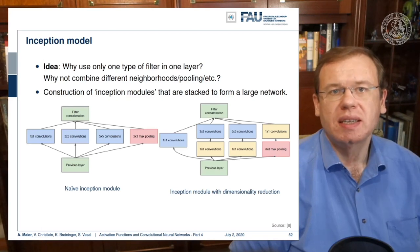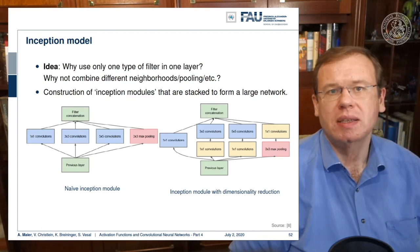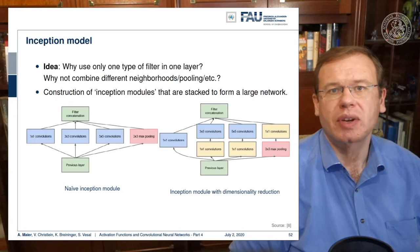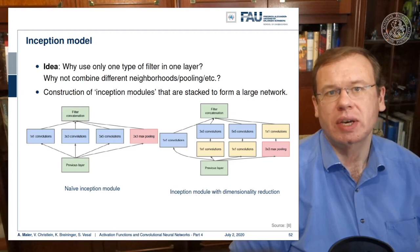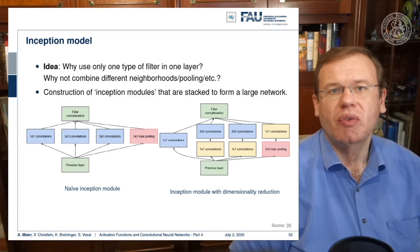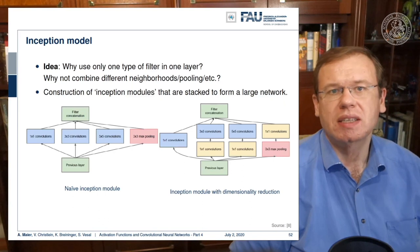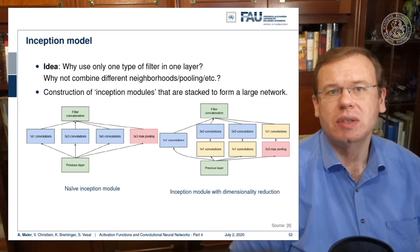If you do this then you can further expand this for example at the 3 by 3 and 5 by 5 convolutions. You may want to compress the channels first before you actually evaluate them. Then you find the configuration here on the right hand side. This incorporates additional dimensionality reduction. Still this parallel processing allows you to have a network to learn on its own the sequence of pooling and convolution layers.